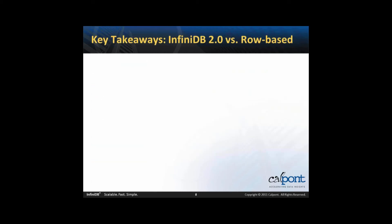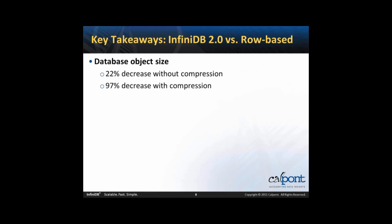Key takeaways: InfiniDB 2.0 versus a typical row-based database. On object size, even without compression, InfiniDB is 22% better; with compression, 97% better. Of course these numbers will vary with your setup — compression is sensitive to the nature and type of data, so some data will compress really well and others will not. This was actual, live, real-world retail data, so that 97% figure is realistic for many users. On database load time, InfiniDB was 36% faster.